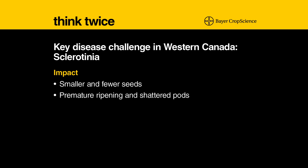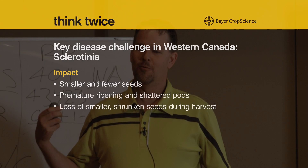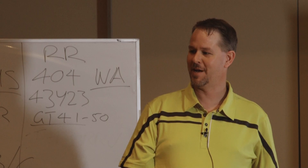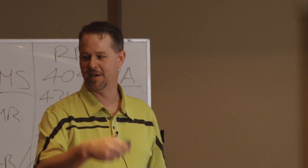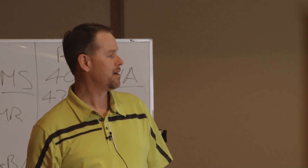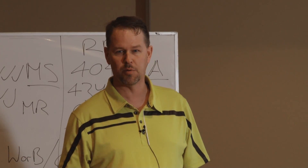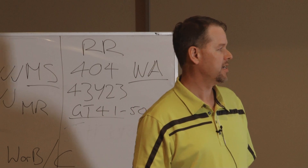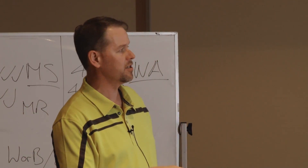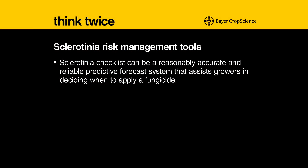Those smaller seeds that may still be captured and laid down in the windrow could certainly be blown out the back of the header during the harvesting process. Once you see sclerotinia, it's too late to make a management decision — it has to be done in a preventative manner. But one of the tools that's still pretty popular and in use is the sclerotinia checklist, or a disease risk assessment card.